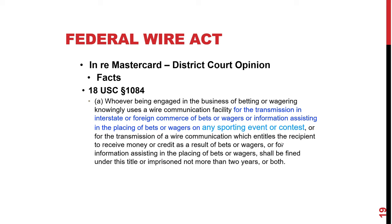The court dismissed the case, stating that the language 'sporting event or contest' in the Federal Wire Act means the Wire Act applies only to sports wagers. Since the plaintiffs did not allege losses on sports books and sporting activities, there could be no violation of the Federal Wire Act, and therefore no violation of the RICO statutes. This was upheld in the Fifth Circuit Court of Appeals.